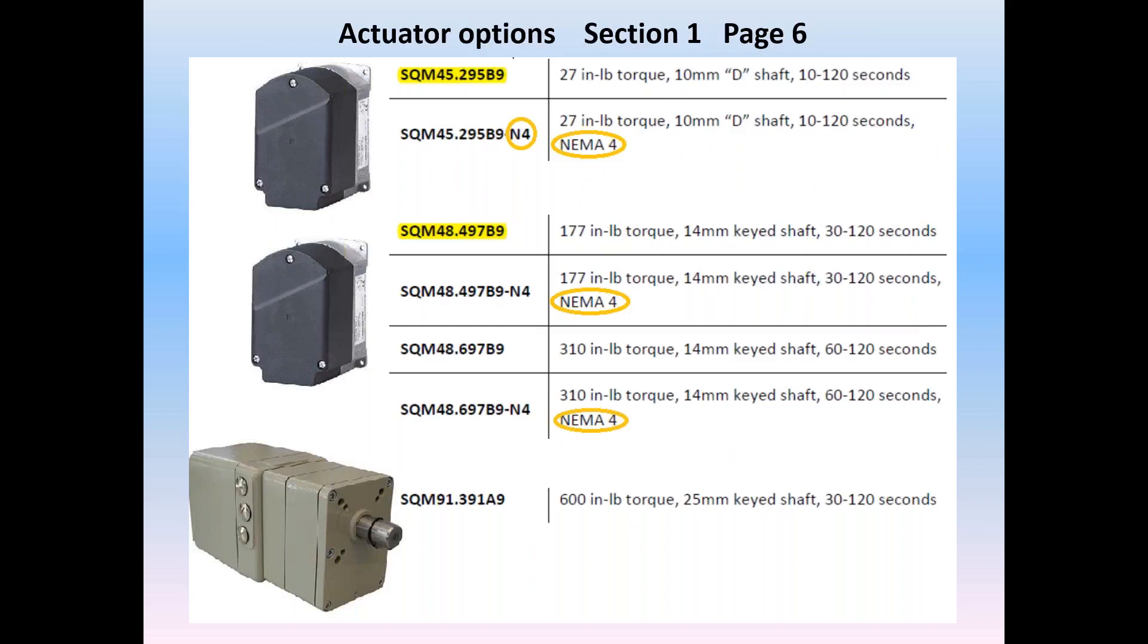The LMV5 is the brain of the system. While the LMV5 is the brain of the system, the actuators are the muscle. Four torque ranges are featured and shown here, and the SQM5 units can be ordered with NEMA 4 kits. The SQM9 is NEMA 4 with no additional shaft seal required. As the torque values increase, so do the minimum running times. All units will operate at the same speed dictated by the LMV5's program settings, up to 120 second ramp times.